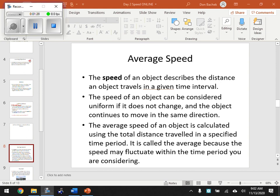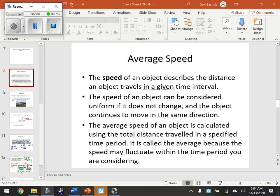Average speed. The speed of an object describes the distance an object travels in a given time interval. The speed of an object can be considered uniform if it does not change, and the object continues to move in the same direction. The average speed of an object is calculated using the total distance traveled in a specified time period. It's called the average because the speed may fluctuate.